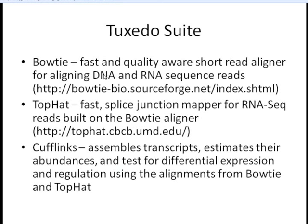The set of sequence alignment programs we're going to talk about today are called the Tuxedo Suite. These include Bowtie, TopHat, and Cufflinks — hence the Tuxedo. Bowtie is a very nice program for doing fast and quality-aware alignments of short reads, and this quality-aware portion takes into account the quality scores that we saw in the FastQ format.